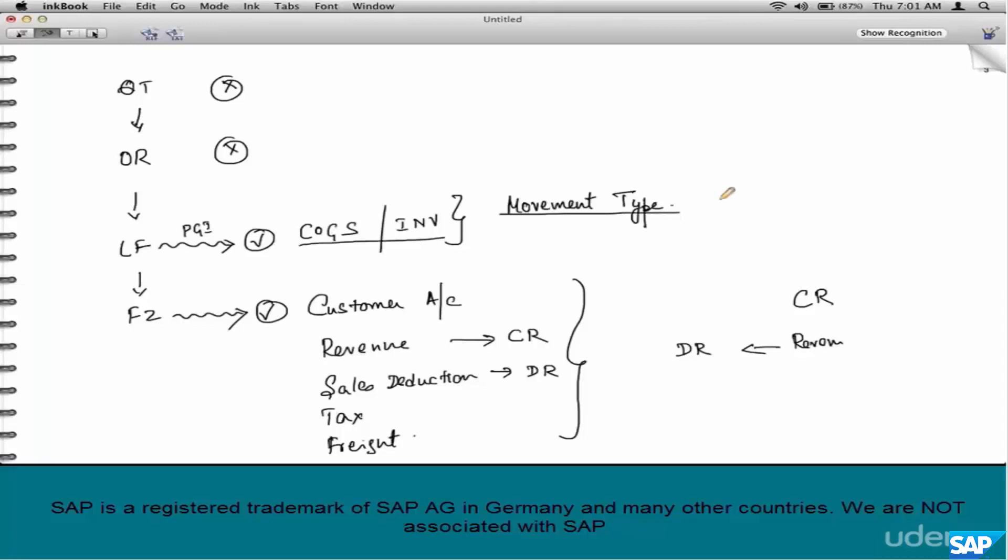Via the movement type. Remember the scheduling chapter, we said the scheduling category will be linked to a movement type, and movement type will be associated with the set of accounts. Scheduling category to movement type, movement type to accounts. Who configures the movement type to the corresponding accounts?